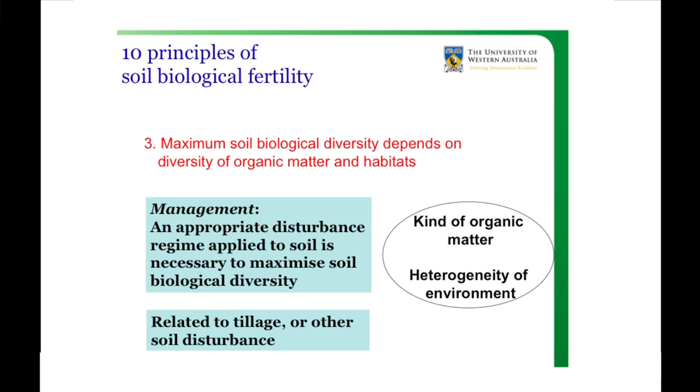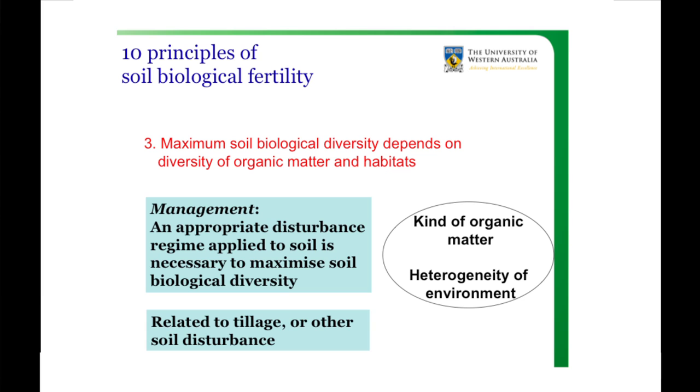The third principle: maximum soil biological diversity depends on the diversity of the organic matter and the habitats. Biodiversity is a big word and we all think it's very important — the soil is the most biodiverse part of the universe. The principle here is the more diverse the habitat, the more diverse the organisms. If you're only growing wheat and only putting wheat into the system, that wheat organic matter is not very diverse. So the more variety of organic matter and different plants you grow, the greater the heterogeneity of the soil and the greater the diversity.